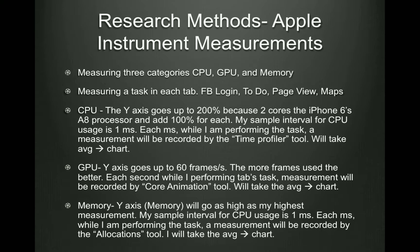Each millisecond while I am performing the task, a measurement will be recorded by the Time Profiler tool. For the GPU, the Y-axis goes up to 60 frames per second — the more frames used, the better. Each second while I'm performing the tab's task, a measurement will be recorded by the Core Animation tool, and we'll take the average and chart it. For the memory, the Y-axis will go as high as my highest measurement. My sample interval is one millisecond, and each millisecond a measurement will be recorded by the Allocations tool. I will take the average and chart it.